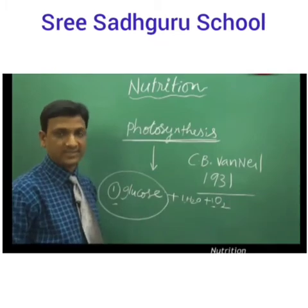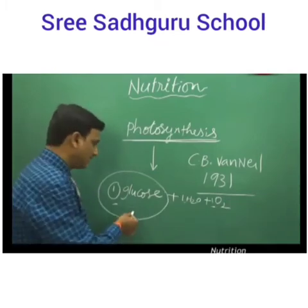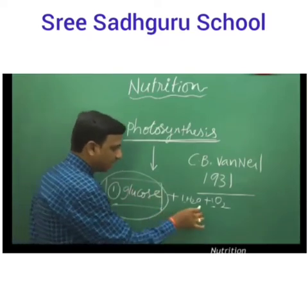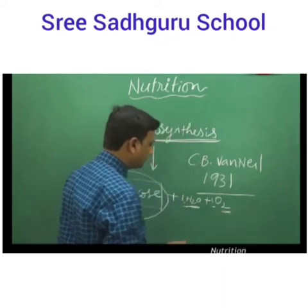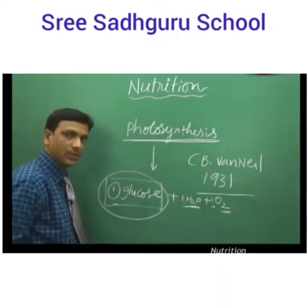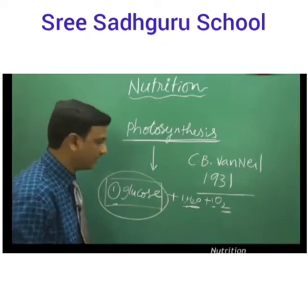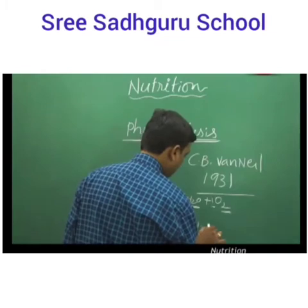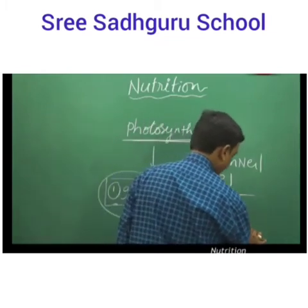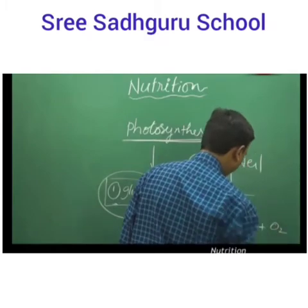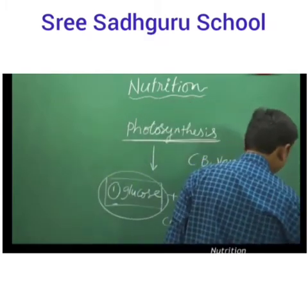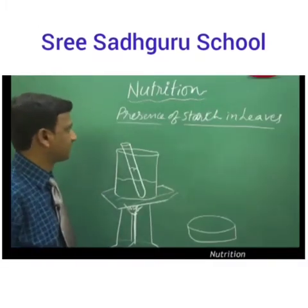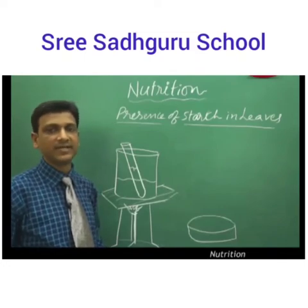The end product of photosynthesis is glucose — the substance which provides energy. Along with glucose, one molecule of water and one molecule of oxygen are formed for each glucose molecule. This is given in the form of an equation: carbon dioxide plus water gives rise to oxygen plus water plus glucose.